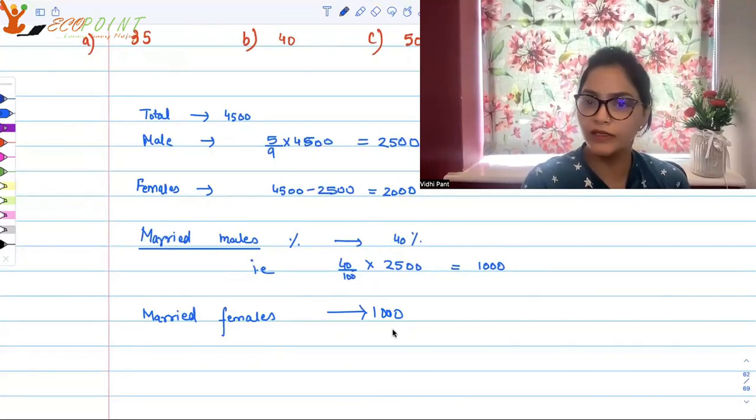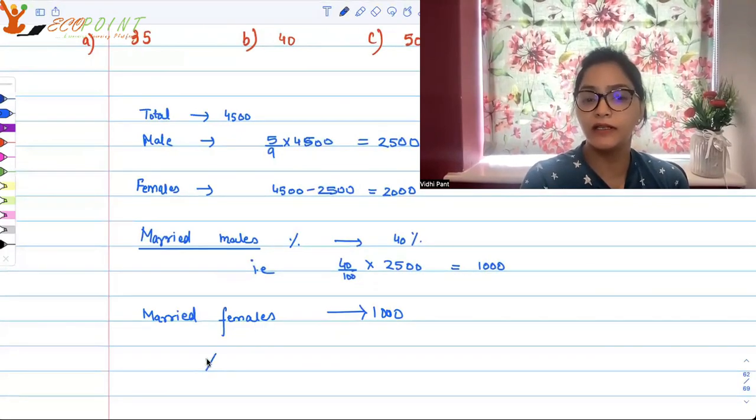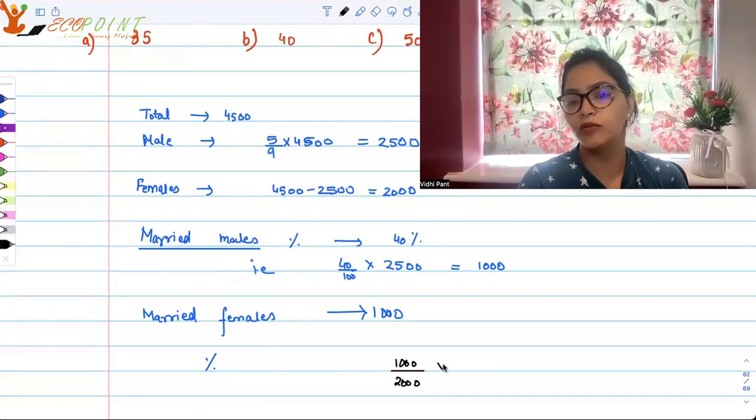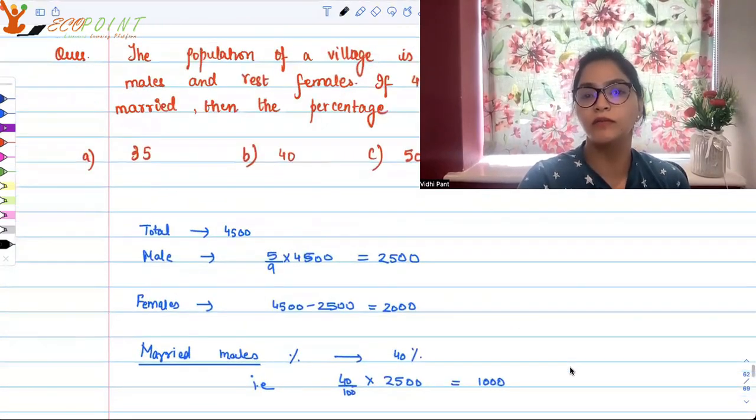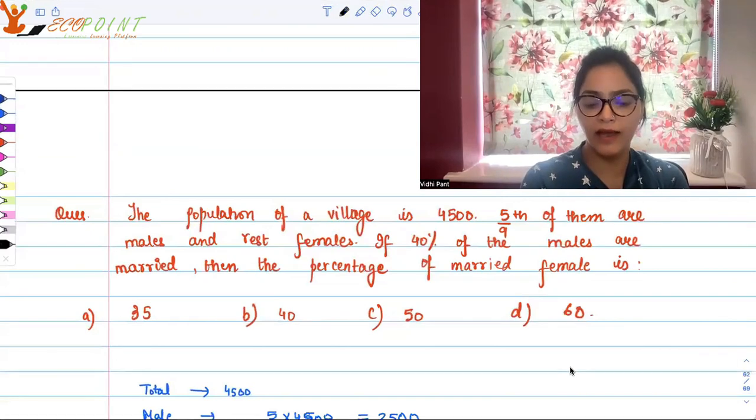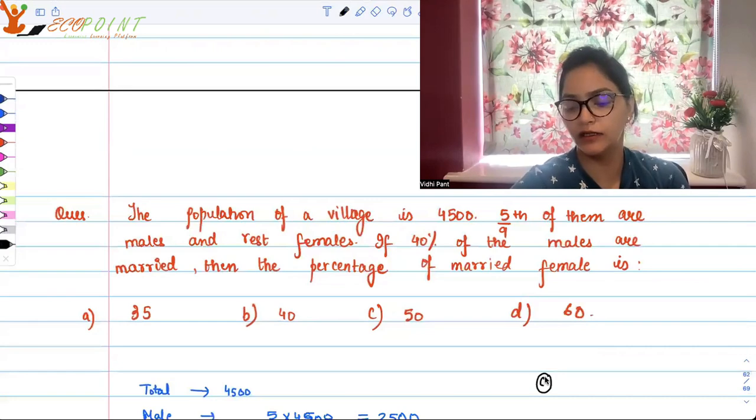We need the percentage. 1000 upon 2000 in terms of percentage would be 50 percent. So if 40 percent of males are married, actually 50 percent of the females are married in that population according to the data. C would be the correct answer.